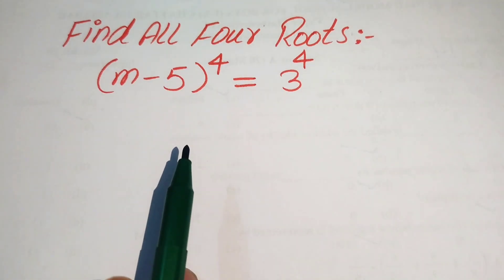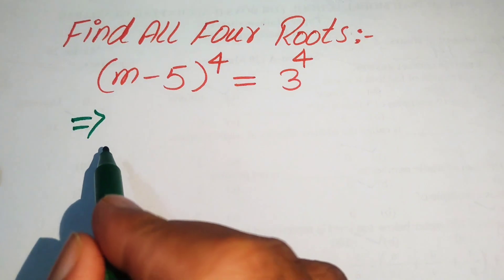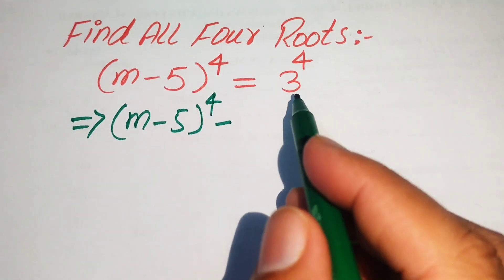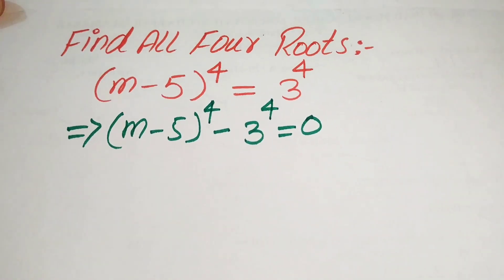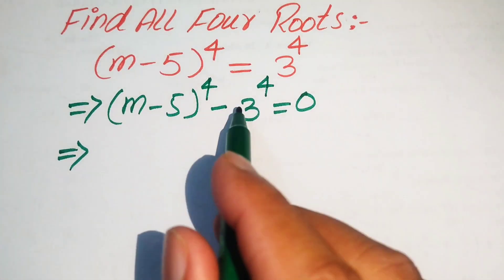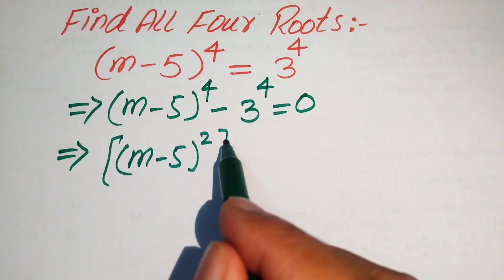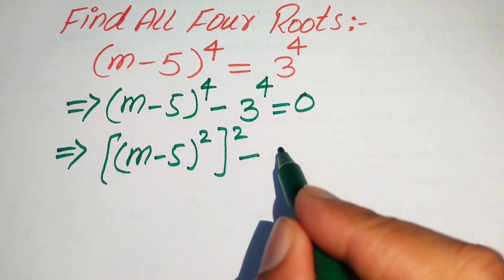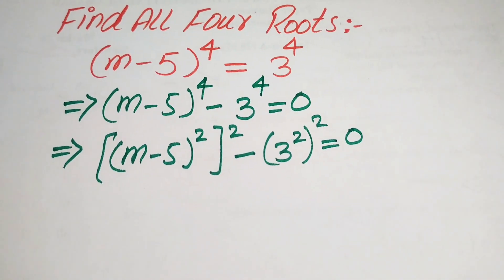The first step is to move 3 to the power 4 to the left-hand side, giving us (m minus 5)⁴ minus 3⁴ equals 0. We then break exponent 4 and rewrite this as [(m minus 5)²]² minus [3²]² equals 0.